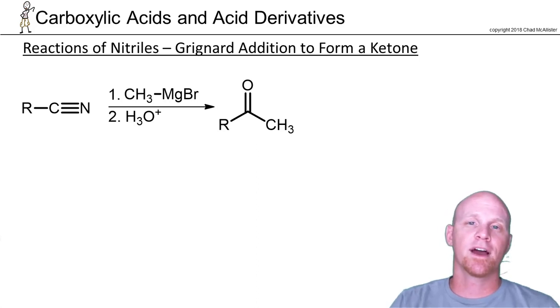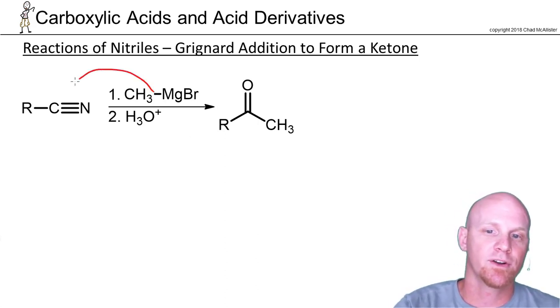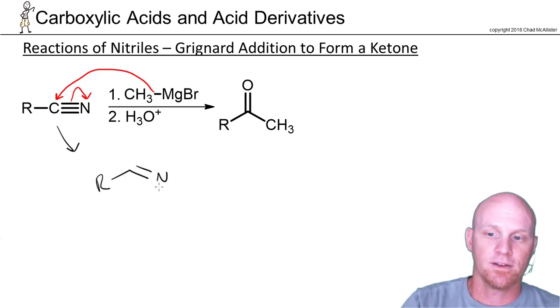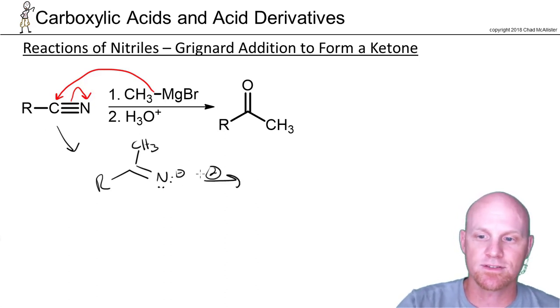You can also react a nitrile with a Grignard reagent. This is going to be a little bit funky because that nitrogen isn't even going to be in the final product. The Grignard will attack the carbon-nitrogen triple bond, kick electrons over to the nitrogen, and we'll take a look at the mechanism. Now we'll have a carbon-nitrogen double bond with a negative charge and our new methyl group from this particular Grignard attached.